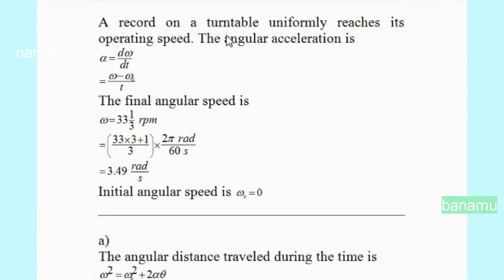A record on a turntable uniformly reaches its operating speed. The angular acceleration alpha is equal to d-omega by dt, which gives alpha equal to omega minus omega-0 divided by t. The final angular speed is omega equal to 33 and 1/3 revolutions per minute, which we convert into radians per second.